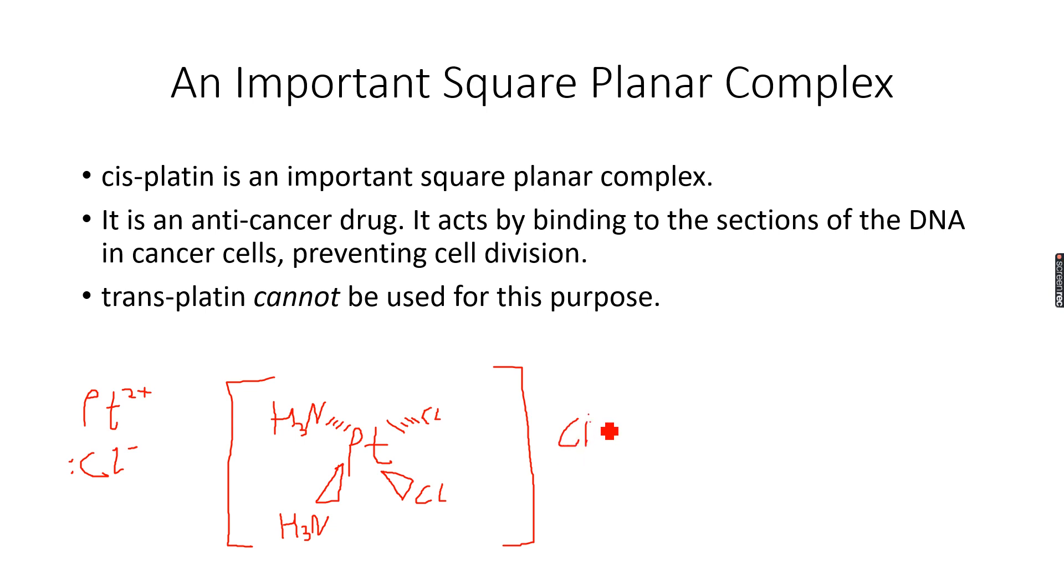It's called cisplatin. This is cisplatin, as you can see cis, because the chloride ions are adjacent, the NH3 are adjacent. The bond angles between the NH3 molecules is 90 degrees, the bond angle between the chloride ions is 90 degrees, so they are adjacent.